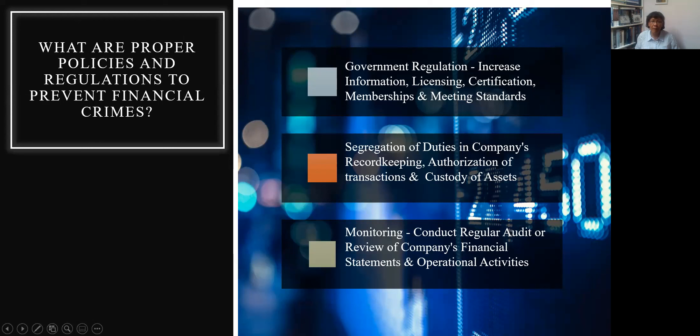Now as to proper regulations and policies to prevent financial crimes, government can do something with regulation to increase available information for investors. There should be some kind of licensing, certifications, memberships, and meeting of standards. Also, companies who are selling shares should have some kind of segregation of duties, record keeping, authorization of transactions, and custody of assets, to avoid illegal insider trading, which is very common with asymmetric information.